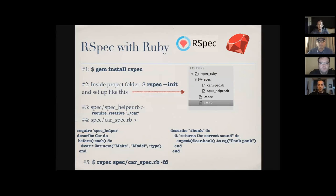The spec_helper can bring in your actual Ruby classes. For example, `require_relative 'car'` will bring in `car.rb`. I'll switch screens and show this in Sublime Text where you can see the whole thing better.